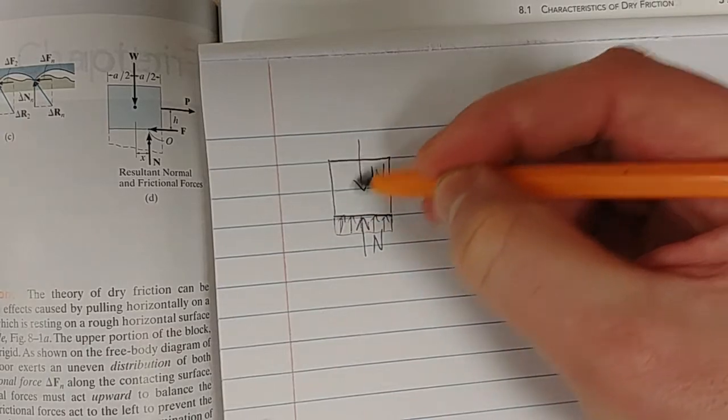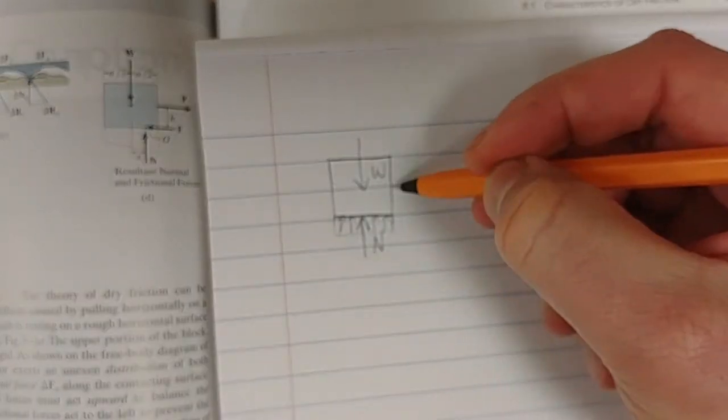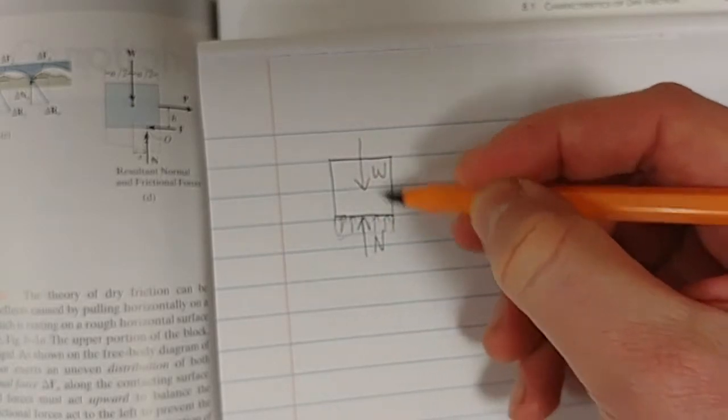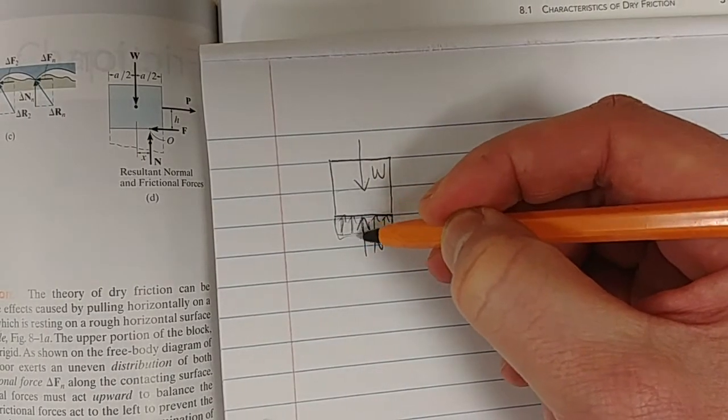We've got a distributed weight, because we've got a length over here, and that normal force also is a reaction force to that weight, but it's distributed.